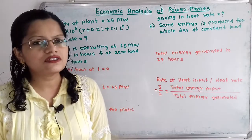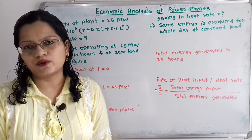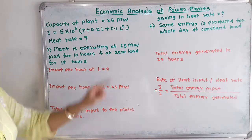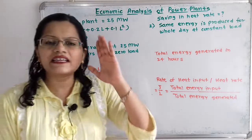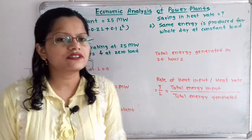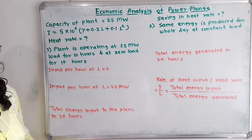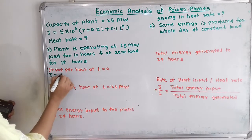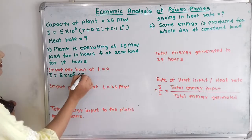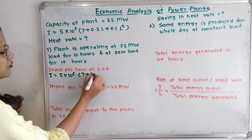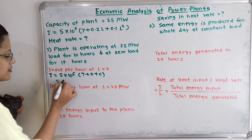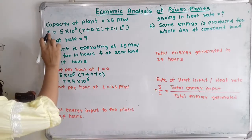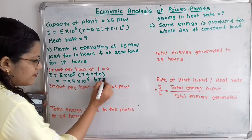The first step is to find the input per hour. If we put L = 0 into the equation, we get I = 5 × 10^6 × (7 + 0.2×0 + 0) = 7 × 5 × 10^6 kilojoule per hour. So at zero load the input per hour is 7 × 5 × 10^6 kJ/hr.